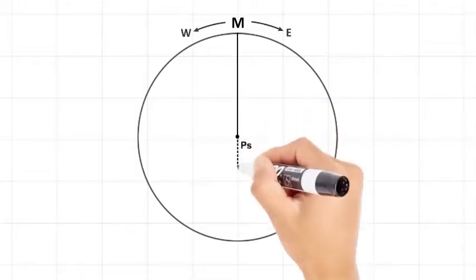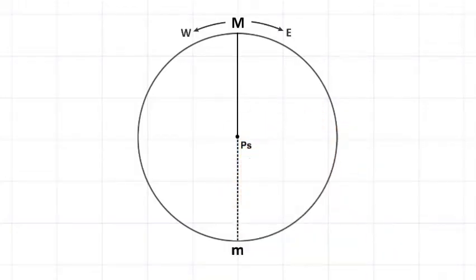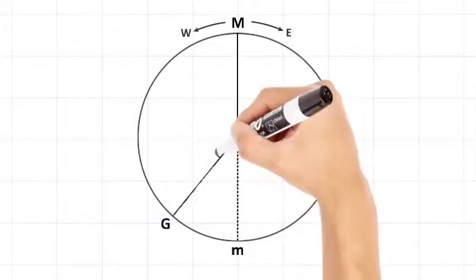The lower branch of the local celestial meridian is drawn as a dashed line from the center to the bottom of the circle and labeled lowercase m. The Greenwich celestial meridian, abbreviated to G, is drawn relative to the local celestial meridian.